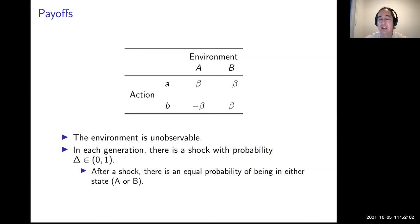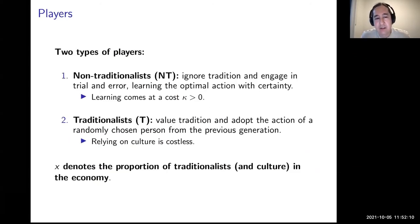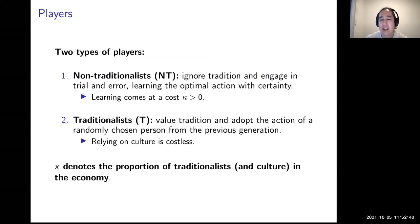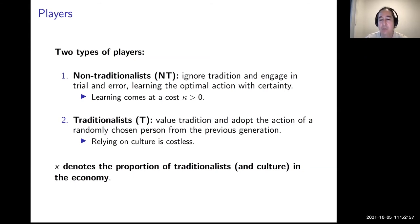The question is: how do you choose which action to take after you're born? There are two player types. Non-traditionalists — think of them as homo economicus or rational economists — ignore tradition, engage in trial and error, and learn the optimal action with certainty. They bear a cost kappa. Traditionalists engage in cultural and social learning: they adopt the action of a randomly chosen person from the previous generation. Culture is costless — they don't bear cost kappa. I denote x as the proportion of traditionalists in the economy.